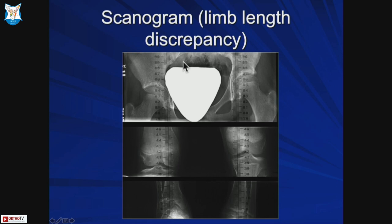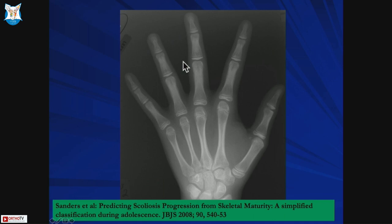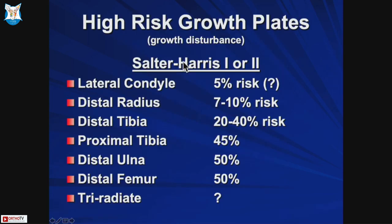A scanogram can also be used, but I use a full-length x-ray and calculate digitally since everything is digital now - it's easy to calculate the discrepancy. You need to estimate skeletal age and remaining growth. I usually use a left hand x-ray, but the elbow is popular here, and you can also estimate bone age based on MRI of the knee if looking at a knee growth arrest.